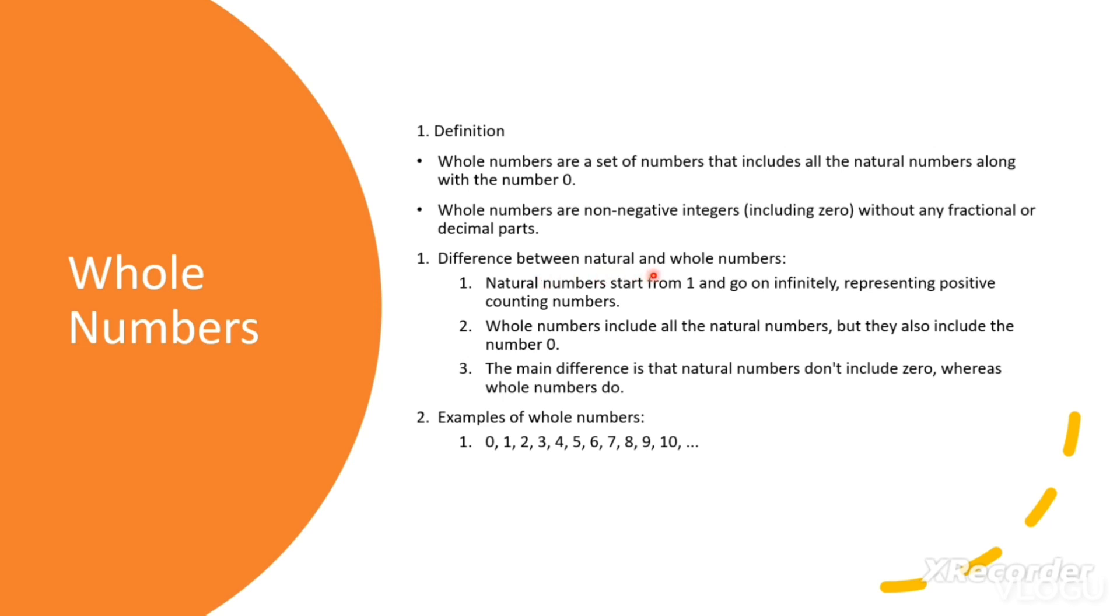Difference between natural and whole numbers. Natural numbers start from 1 and go on infinitely, representing positive counting numbers. Whole numbers include all the natural numbers but they also include the number zero. The main difference is that natural numbers don't include zero whereas whole numbers do.